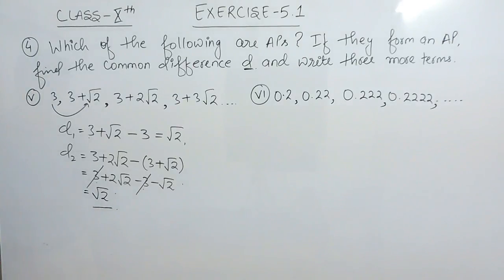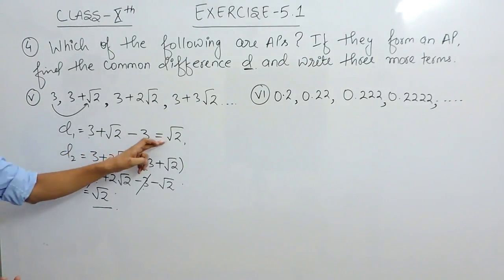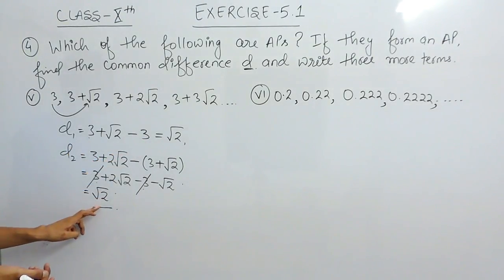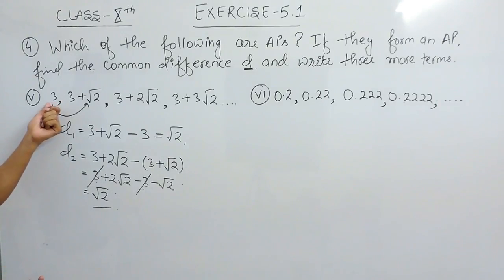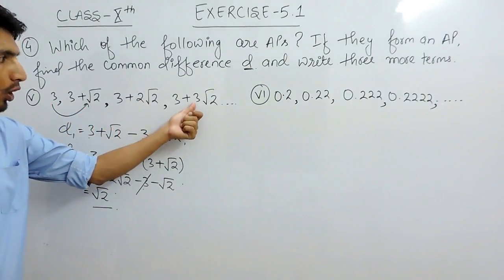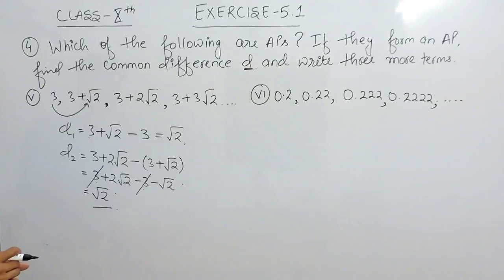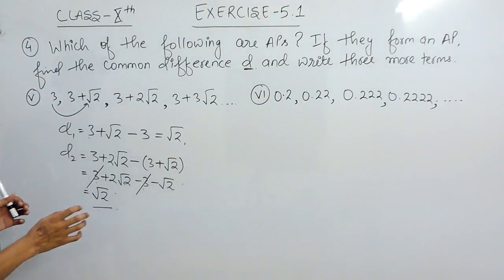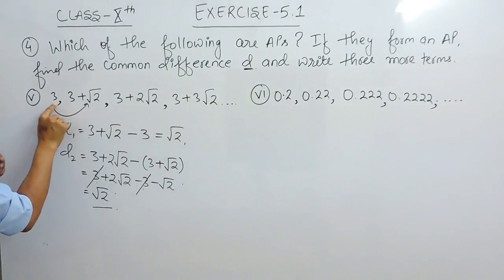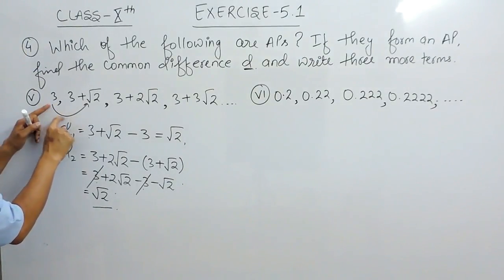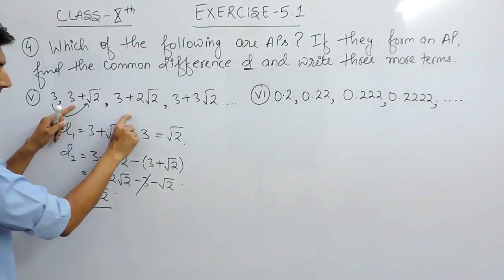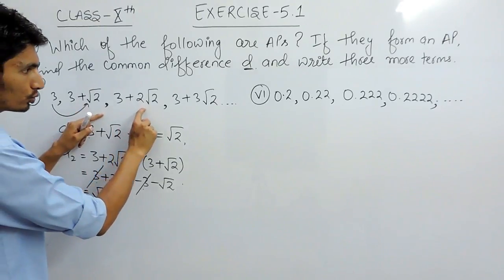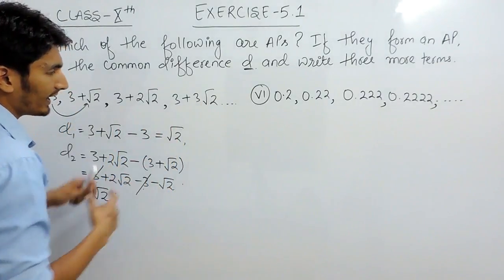Clearly, the common difference in both cases is the same — we are adding √2 each time, a constant term. So this is a perfect example of arithmetic progression. The terms follow the pattern: no √2, then 1√2, then 2√2, then 3√2.